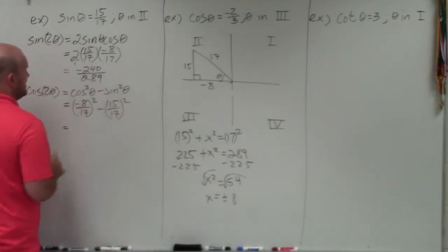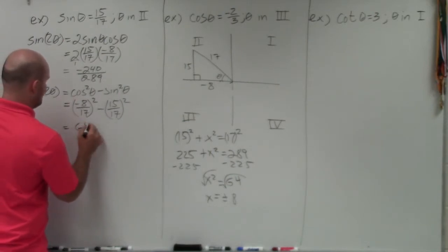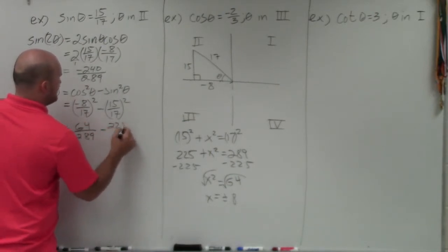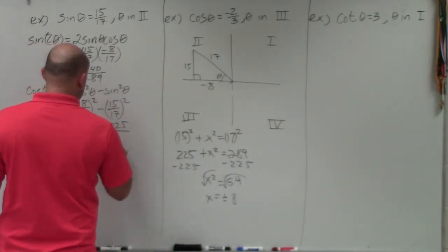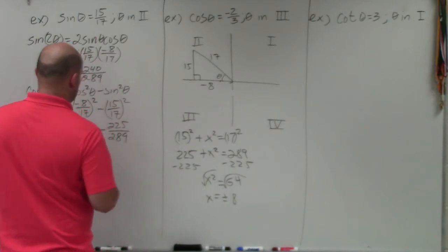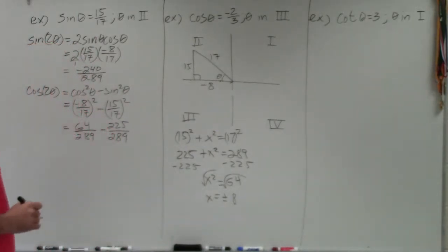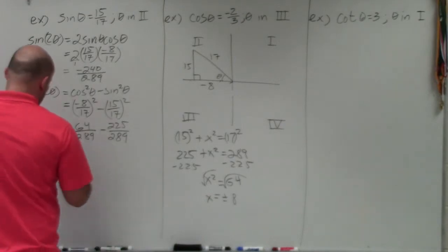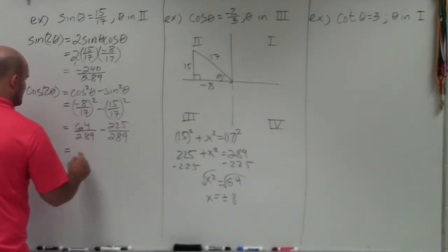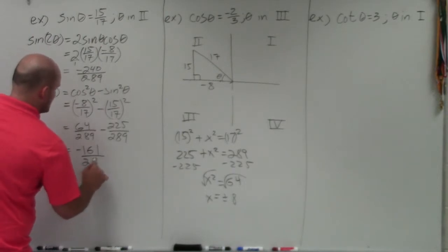So therefore, negative 8 squared is going to be 64 over 289 minus 225 over 289. And 64, that is going to be 861. 61, very good. So therefore, that's going to be 161, negative 161 over 289.